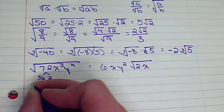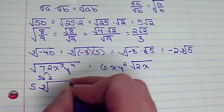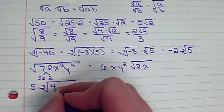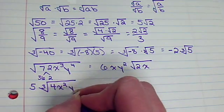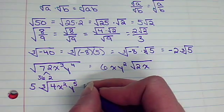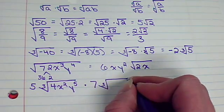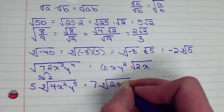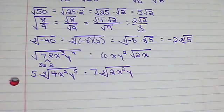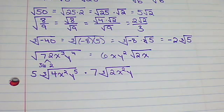Now, that whole multiplication idea. What if I had 5, and let's go with cube roots, of 4x²y⁵, times 7 cube root of 2x²y?